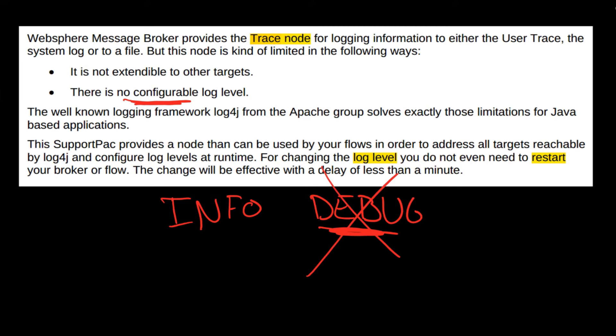And when you deploy that code out in an environment, a production environment, you don't want any debug level information being printed out. You can simply take out the debug level inclusion statement and say, I only want to see info statements in a production environment. You can't do any of that. You can't do either of these two things with the trace node inside IIB.